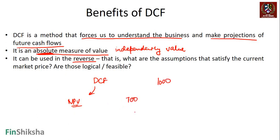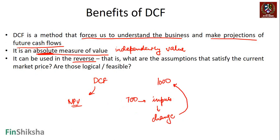Say I'm getting a value of 700 using some inputs. I can change those inputs to arrive at the market price of 1,000 — which tells me what kind of assumptions the stock market is making to arrive at that price.